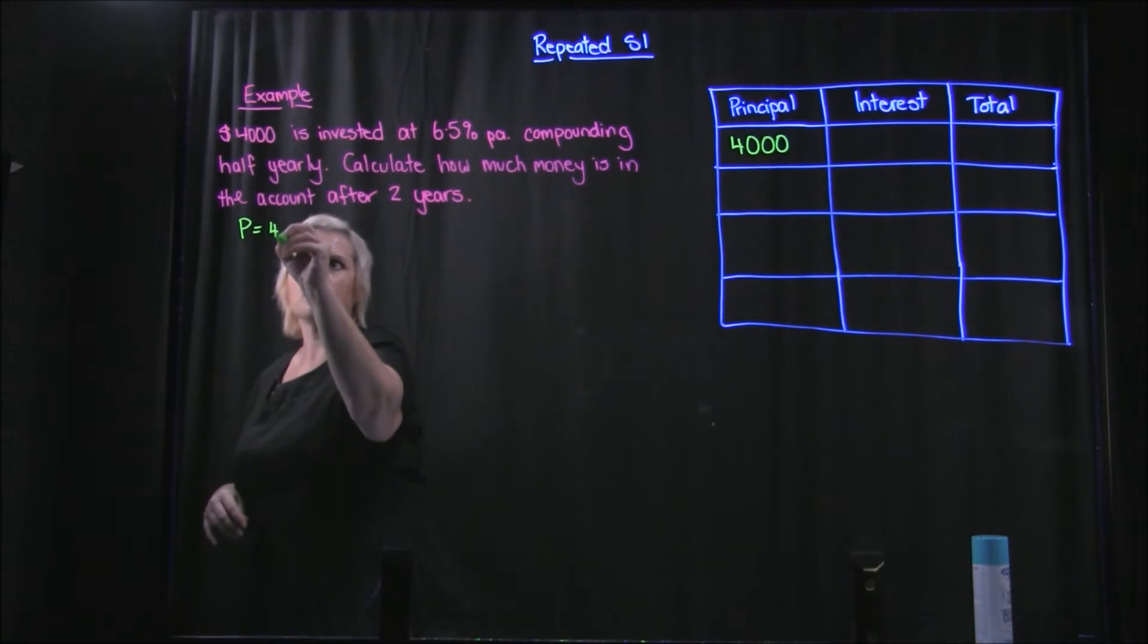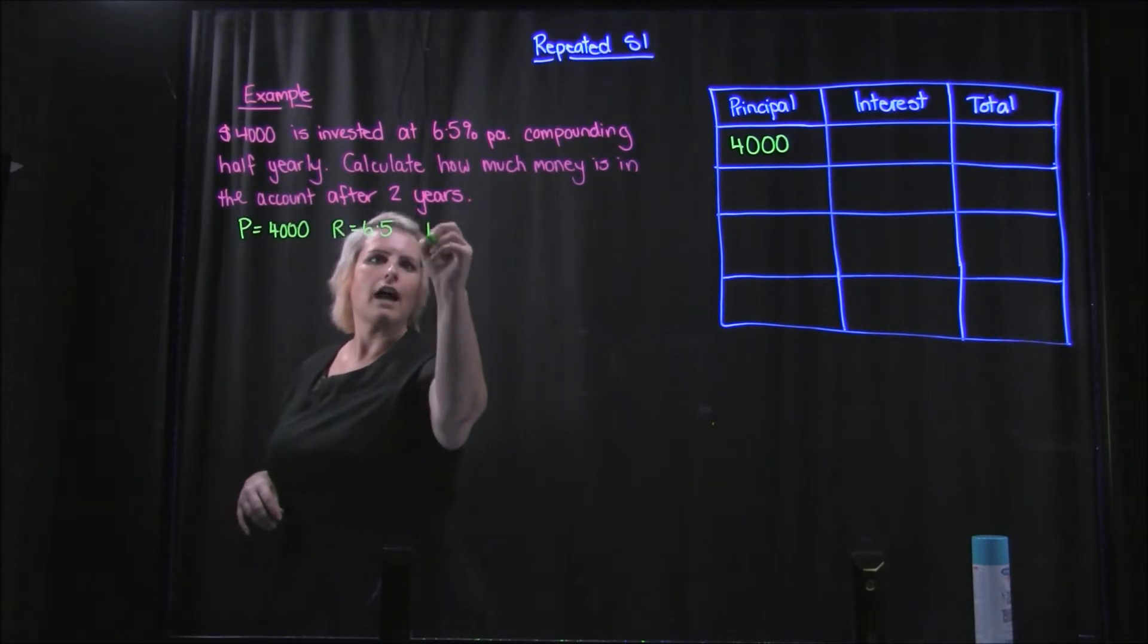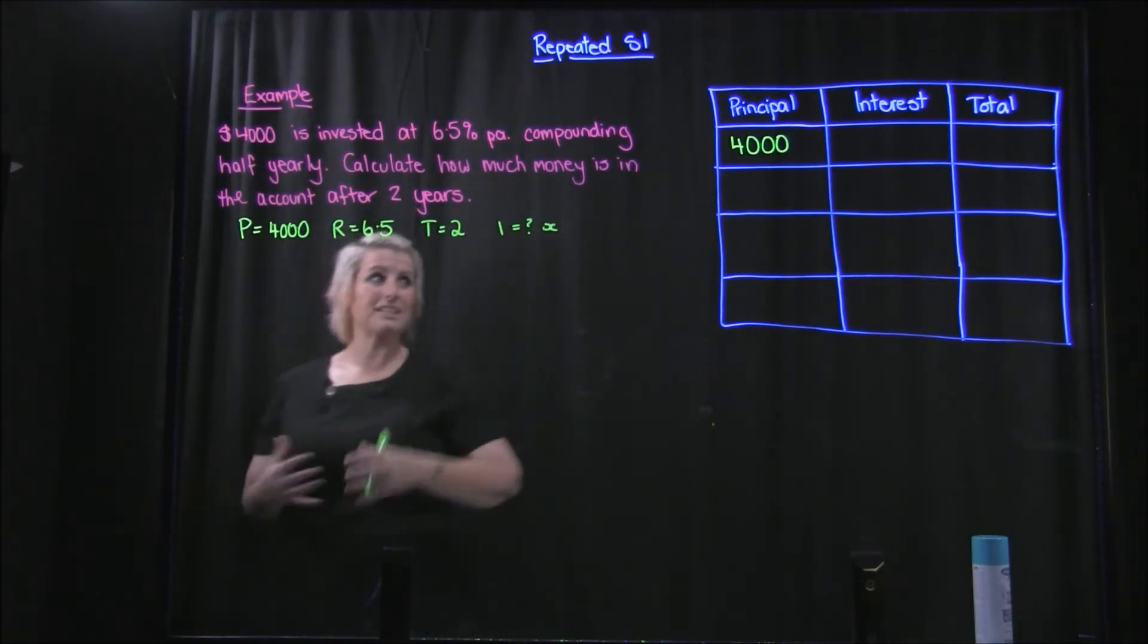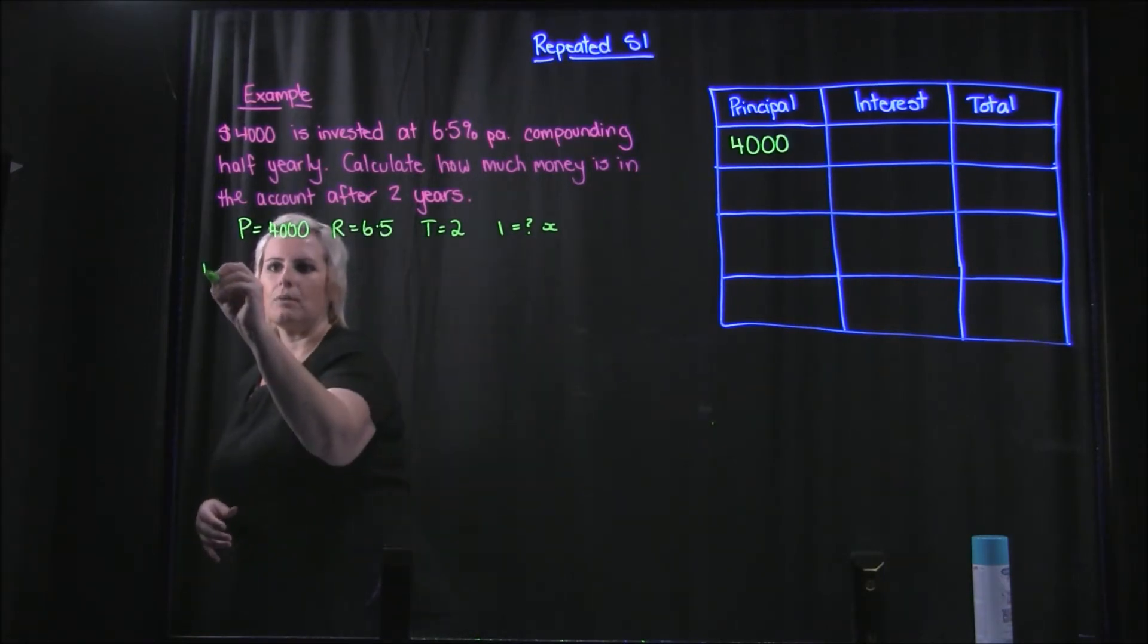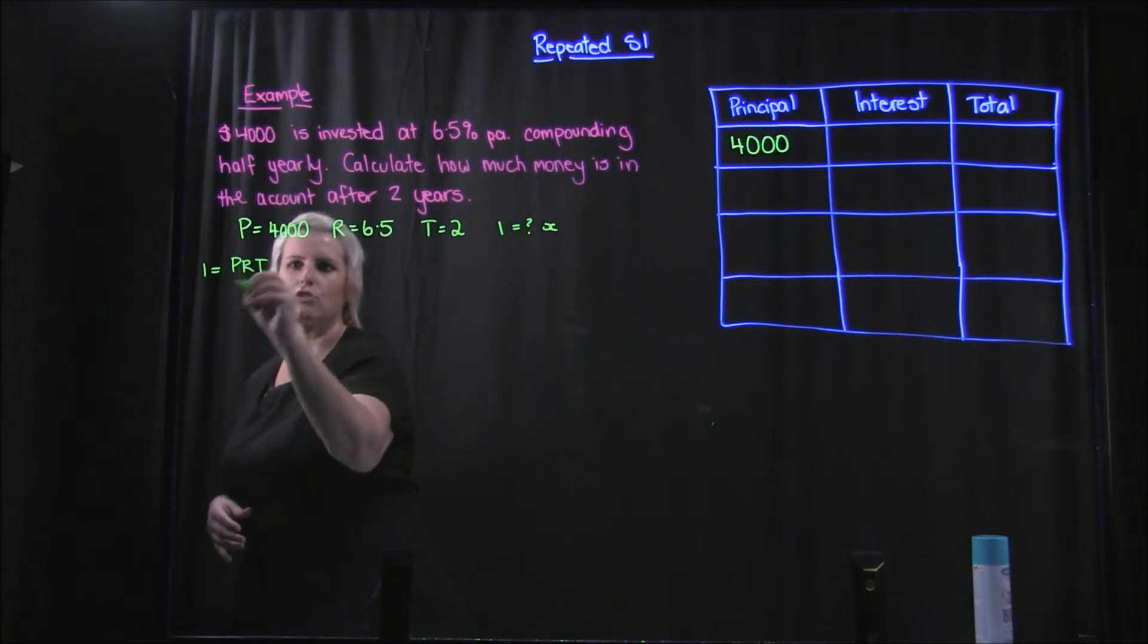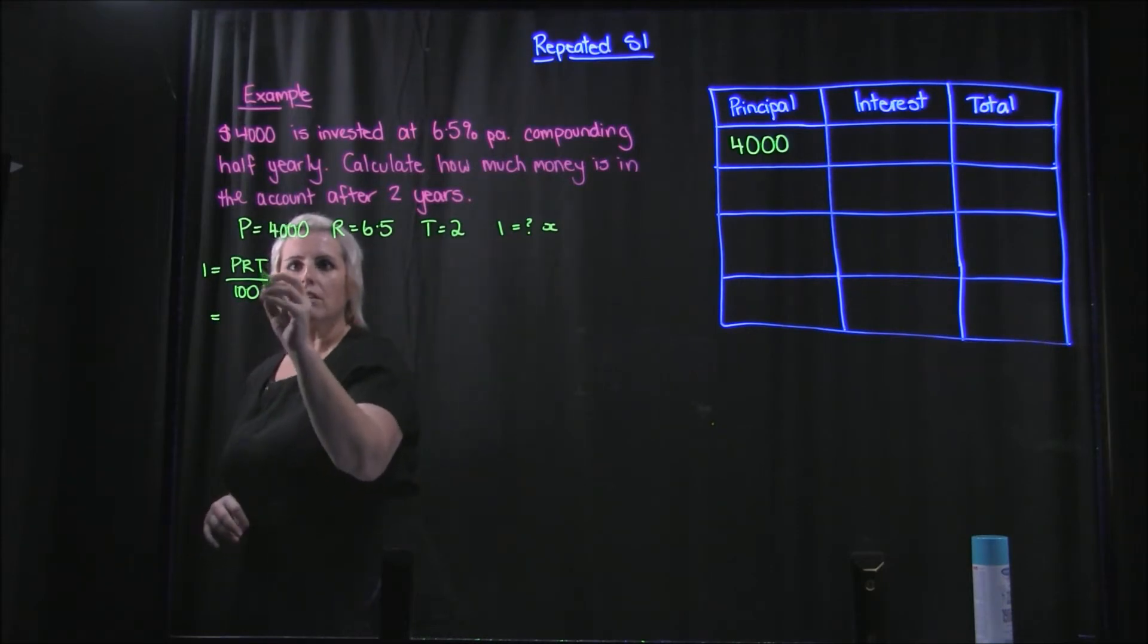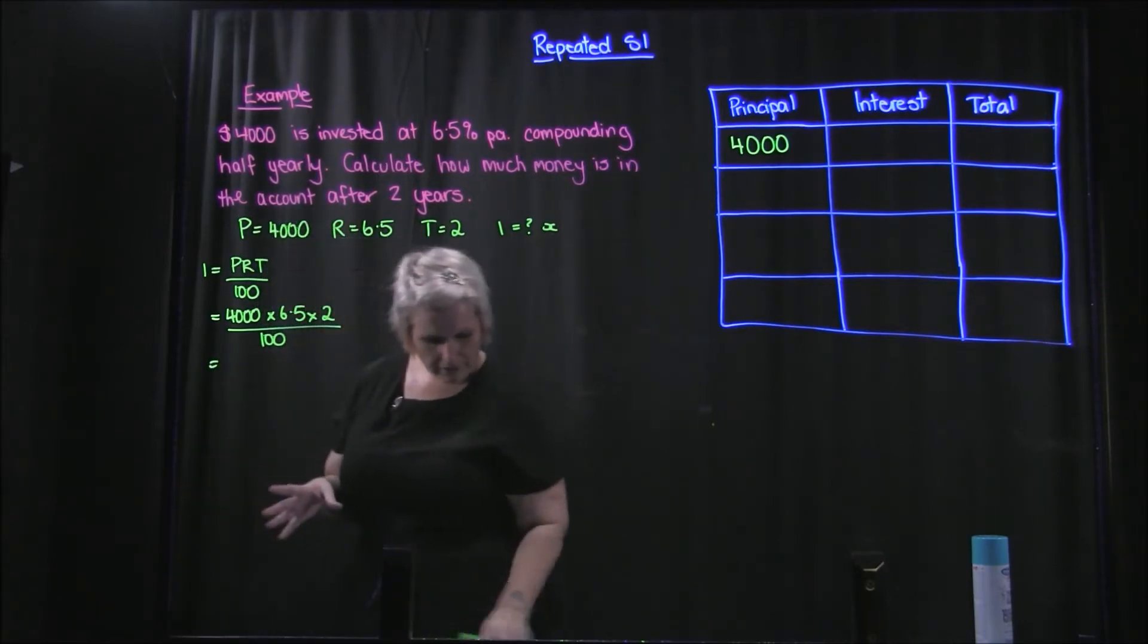Now my starting principal is $4000 so I can put that in. Over here I can identify the principal as $4000, the rate as 6.5, and the time as two and the interest is unknown. So all I have to do is my same calculations over and over again. So I start with I equals PRT. So I'll just do the first one or two and then you can fill in the rest. So I've got 4000 by 6.5 is my rate.